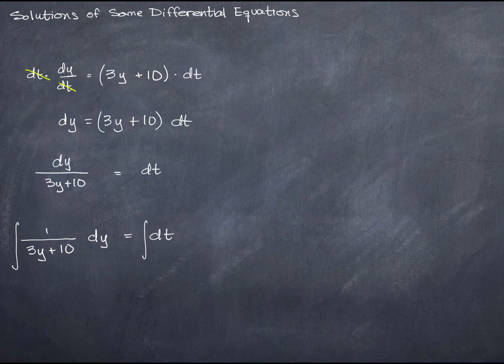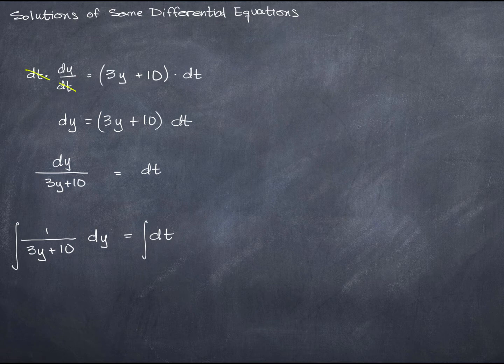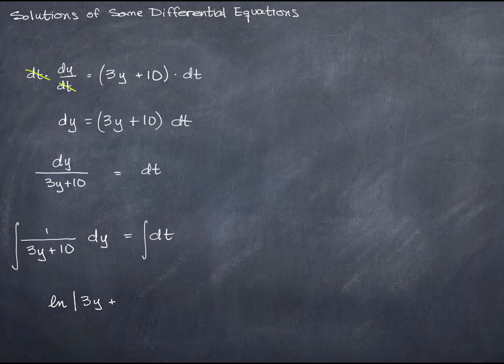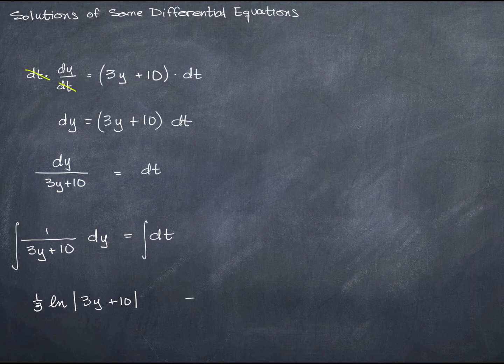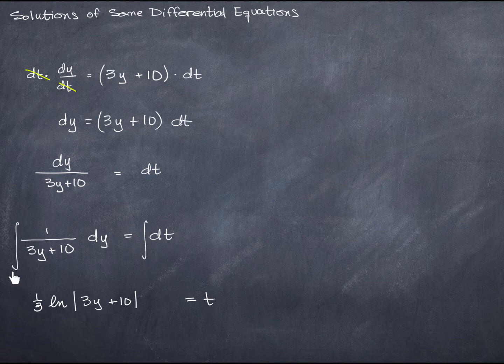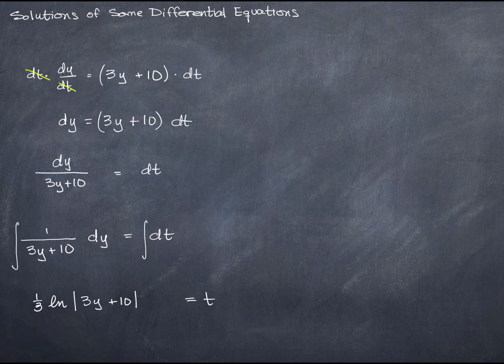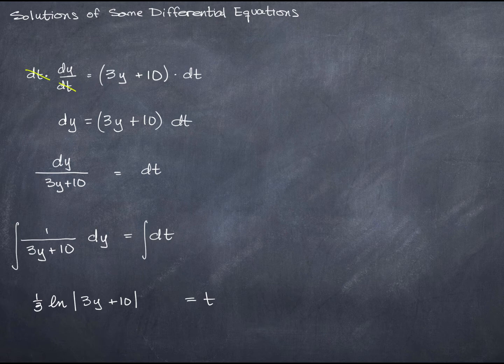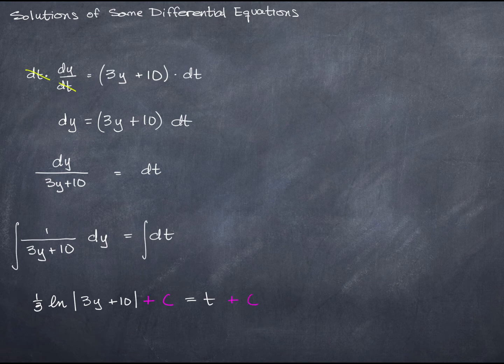What this gives me here is the natural log of 3y plus 10 times 1 third equals, that's my left-hand side. My right-hand side is t. Notice, though, that I don't have any limits of integration on either side. I have chosen to integrate both sides of this equation. So I don't know what any limits might be. These are indefinite integrals. So I need to add plus c. And I'll do that on both sides for now, but I'll show you why you really only need one of those.